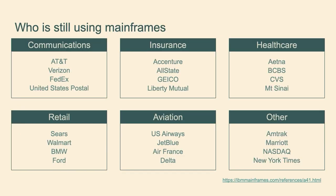This is a modern mainframe — most companies are using something in between. Banking and governments tend to be where people think of mainframes, but it's definitely everywhere. I added a bunch of other industries: healthcare, insurance, and most airlines are still using mainframes. I added the New York Times. There's a link at the bottom you can pull up with a huge list of companies IBM is tracking that use mainframes across all these industries. It's just everywhere.